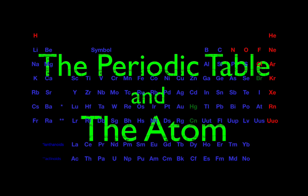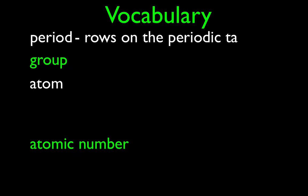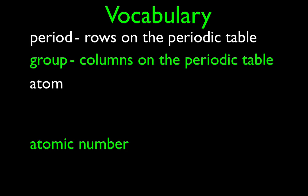Today's video is entitled the periodic table and the atom. These are the vocabulary words we are going to go over and use in this video. The first one is the period. The periods on the periodic table are the rows — each row is called a period. The groups on the periodic table are the columns — each column is called a group.